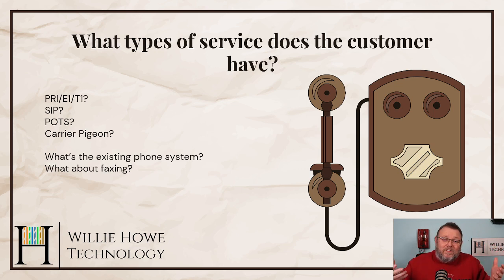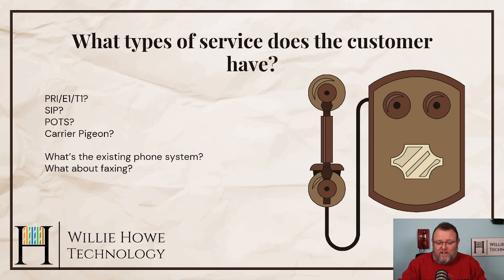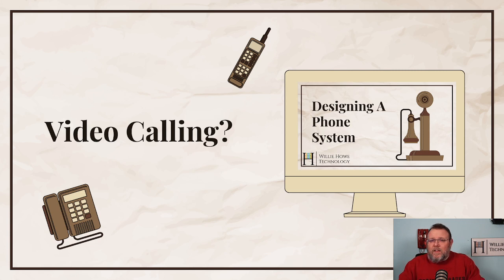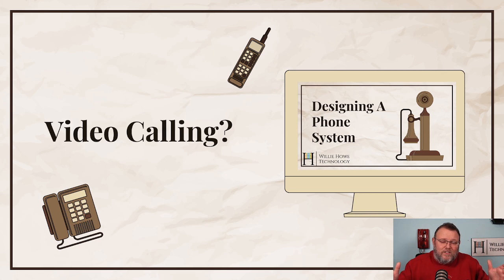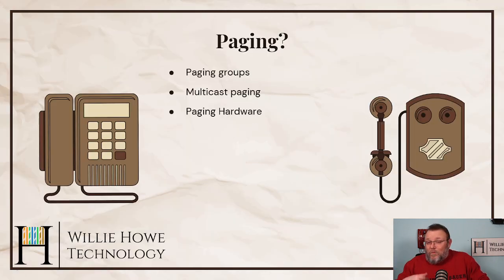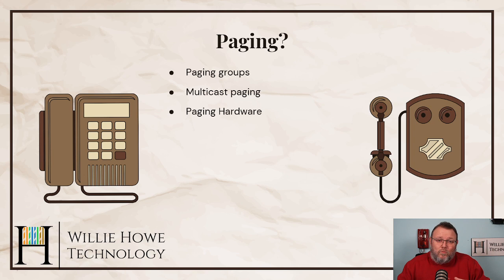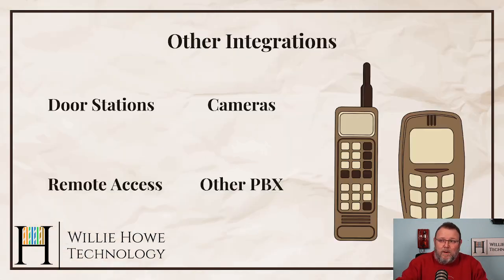You also need to know what the existing phone system is, whether they still use faxing and how they use it, and whether the customer wants video calling — there's a whole set of considerations that go with video calling. One of the next things to look at is paging: do they need paging groups, multicast paging, or is there special paging hardware? We've run into all of these and they're things you have to think about.